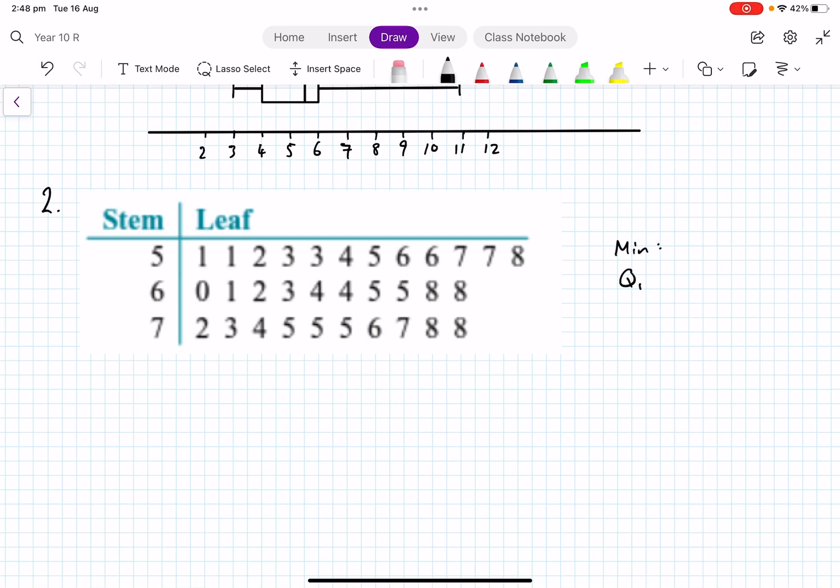So we want to work out how many scores there are, find the five-number summary. It's always good to do that: min, Q1, Q2, Q3, and max. And then we can go along and work it out. So the minimum of course is 51, the maximum is 78.